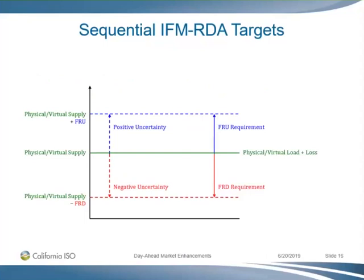It's only the uncertainty, yes. The flexible ramp-up product in real time has two components: the uncertainty component that we procure with the award, and the forecasted movement from binding to advisory interval. We need the forecasted movement for proper settlement in real time because we only settle the binding interval for energy. The flexible ramp-up product bridges the binding to advisory interval. In the day-ahead market, we don't have this problem because we settle every interval, so we're only concerned about uncertainty. The forecasted movement equivalent in day-ahead is already compensated by paying every energy schedule for every hour.